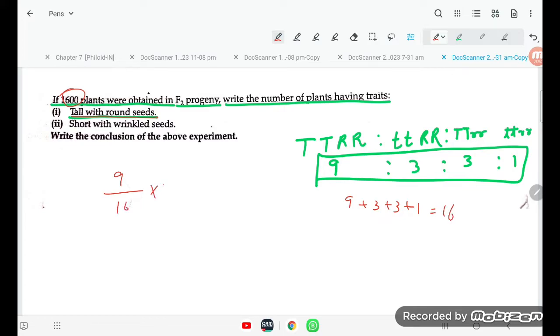So 9 upon 16 into 1600. So this is, it is going to be 16 sections cancel out, so 900. So these are going to be 900.